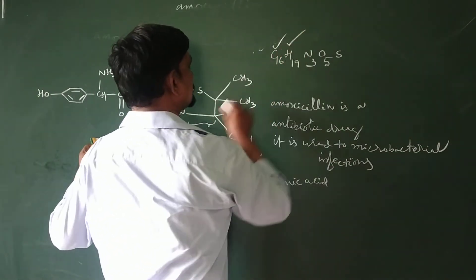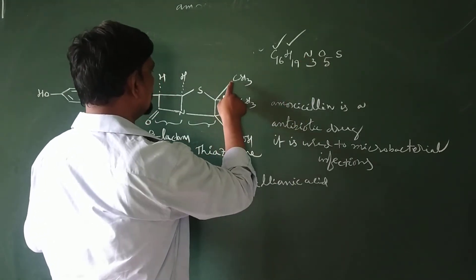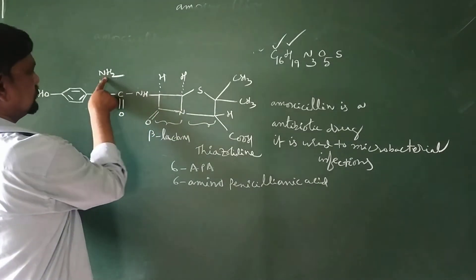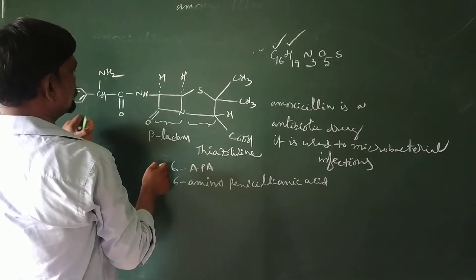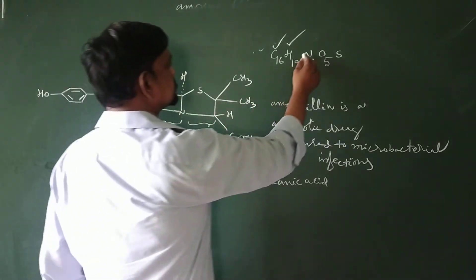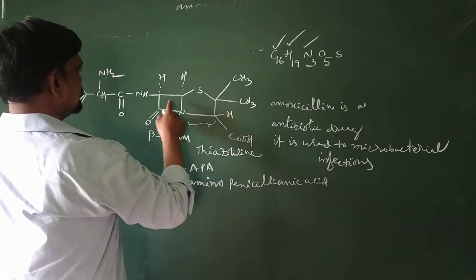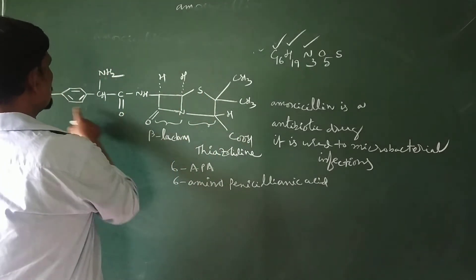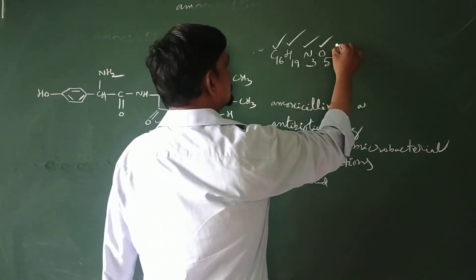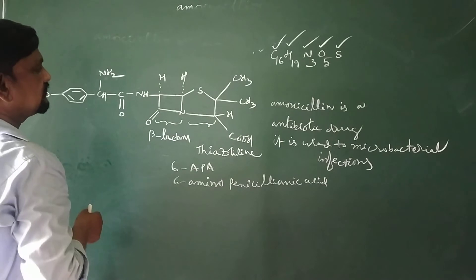Nitrogen is verified with 3 atoms — nitrogens here: 1, 2, and here also nitrogen: 1, 2, 3. Three nitrogens tallied. For O5, oxygens are: 2, 3, 4, 5 — five oxygens are tallied, and then sulfur. This is the amoxicillin structure confirmed.